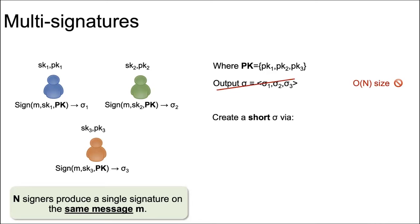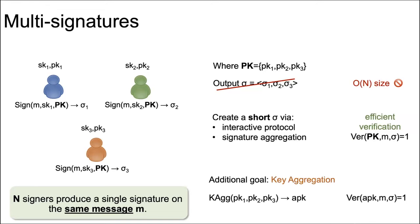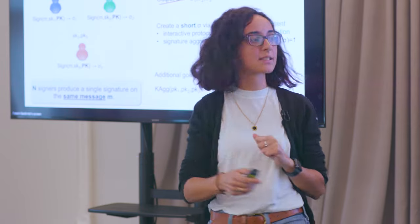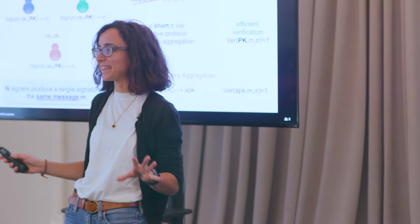Most multisignature schemes manage to create a short multisignature via two different ways: either assuming an interactive protocol among the signers, or assuming some sort of aggregation across signatures that gives a very short signature. We want the signature to have efficient verification, sublinear in the number of signers. Additionally, many multisignature schemes support key aggregation, an algorithm that combines public keys into a public key of sublinear size, making verification even more efficient.